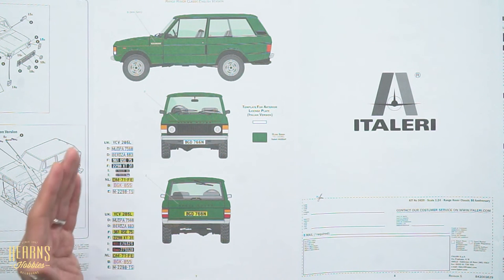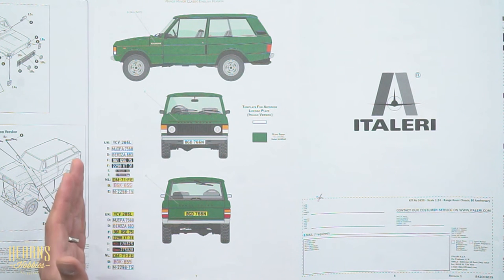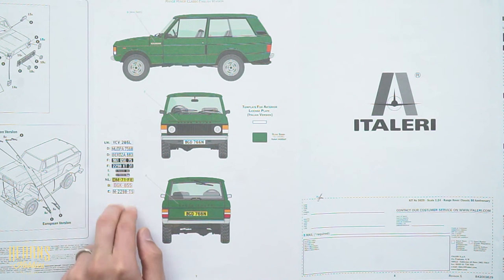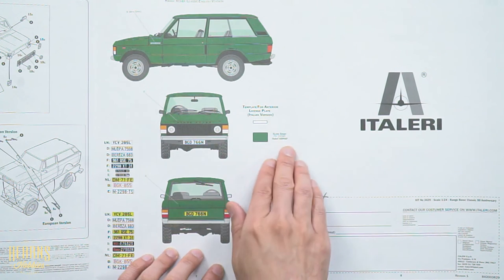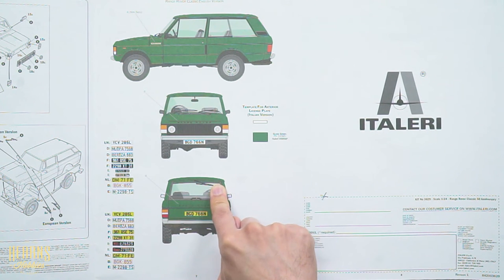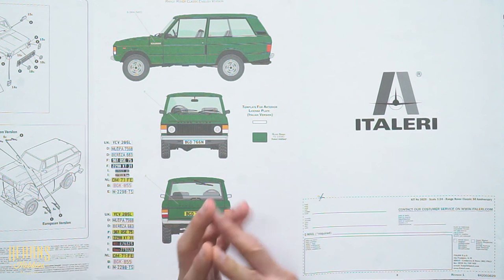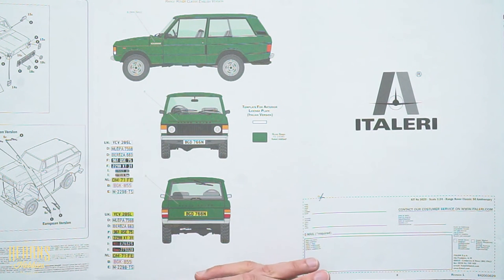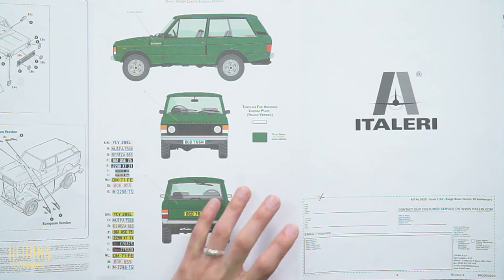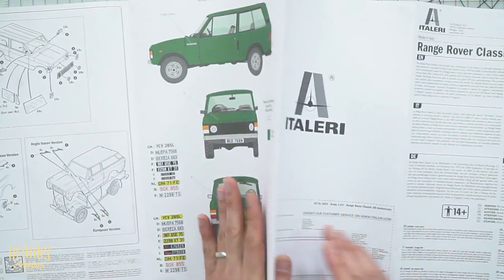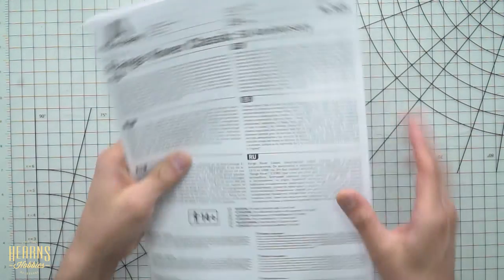You've got British, German, French, Italian, Dutch, Belgian registration plates. And then this is a classic British green color. But of course, you can paint this in any of the either authentic colors or you can paint it any color you like if you're making a custom type. So that's a really nice kit.